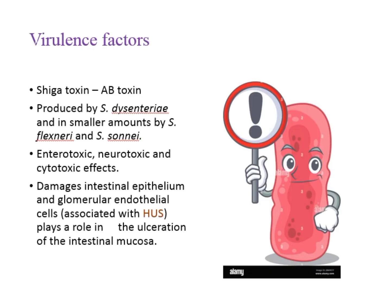The virulence factors of Shigella: Shigella produces Shiga toxin, which is a classical type of exotoxin with an AB structure — A is the active part and B is for binding. The toxin is produced in high amounts by Shigella dysenteriae and in lesser amounts by the other species, flexneri and sonnei. This toxin is unique because the single molecule has three types of activities: enterotoxic, neurotoxic, and cytotoxic.